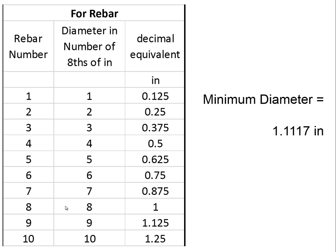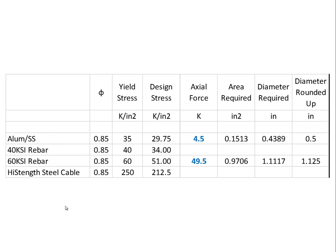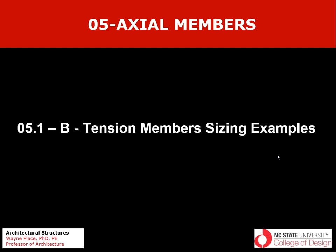If we'd used 40 ksi rebar, we would have ended up with a larger bar. There is some 70 ksi or 80 ksi steel rebar available, but it tends to be used for specialized applications, so we'll stick with either 40 ksi or 60 ksi rebar for all our calculations. For 60 ksi rebar, we multiply 0.85 × 60 to get a design stress of 51, input our axial force, calculate the required area, then the required diameter, and round up to the nearest multiple of eighths of an inch. That concludes our video on tension member sizing examples.